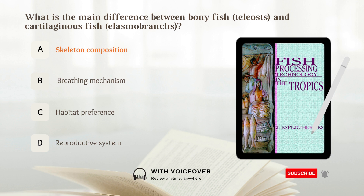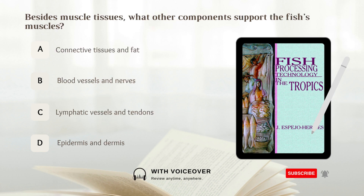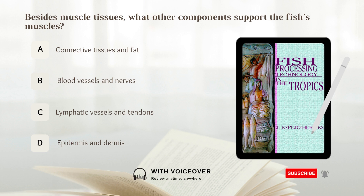Besides muscle tissues, what other components support the fish's muscles? A. Connective tissues and fat. B. Blood vessels and nerves. C. Lymphatic vessels and tendons. D. Epidermis and dermis. Answer: A. Connective tissues and fat. Besides muscle tissues, connective tissues and fat support the fish muscles.